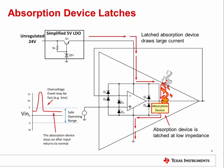Once the absorption device is on, it will remain on until power for the circuit is cycled. In this mode, the absorption device has a very low impedance and draws excessive current from the LDO. This high current generates a great deal of heat, which often destroys the device. It is important to remember that the absorption device was designed to protect the integrated circuit from out-of-circuit ESD events and is not intended to protect against this kind of electrical overstress event. It is very important to design EOS protection circuits that prevent the absorption device from ever turning on during an EOS event.